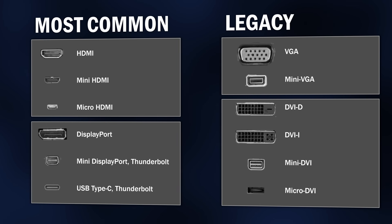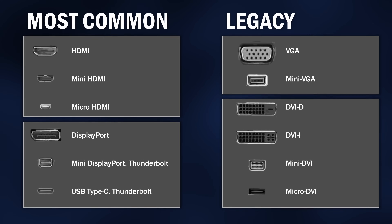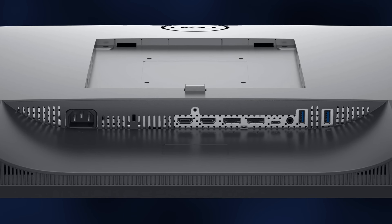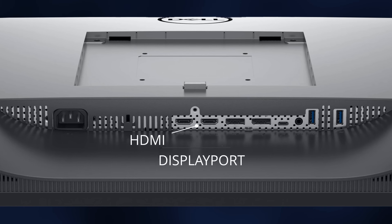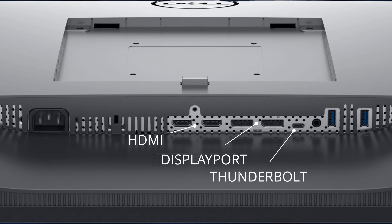Next, we're going to do the exact same exercise, but this time on our monitor. So here once again you can see all of the most common display ports and see if you can find a match on your monitor. Here as an example, I have a monitor and it has an HDMI, a DisplayPort, and a Thunderbolt port, so I can use any one of these. But because I have the Thunderbolt on my laptop, I'm going to use the Thunderbolt on my monitor.